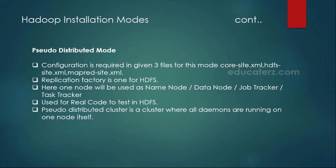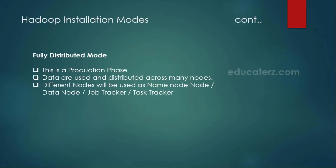In pseudo distributed mode you will be updating the configuration files: core-site, hdfs-site, mapred-site, and yarn-site. In fully distributed mode, this is the final production cluster. All the processes — name node, data node, and MapReduce processes — will each be on different machines. You will have multiple machines distributed over the network, using one machine as a name node, one as a data node, another as another data node. This resembles your production and pre-production clusters.